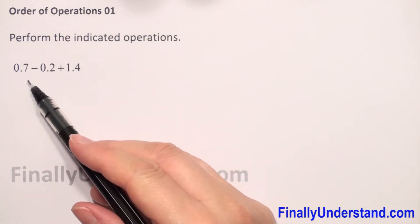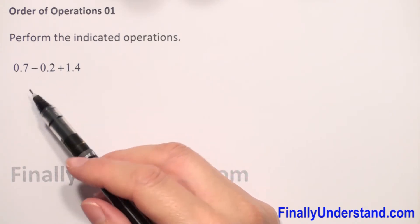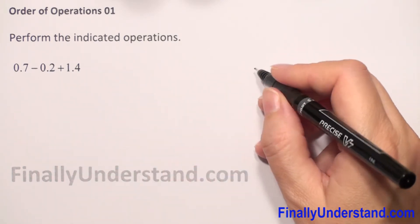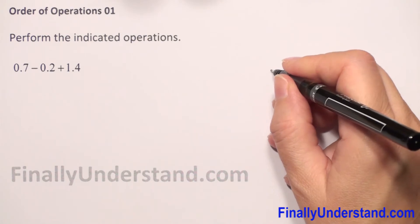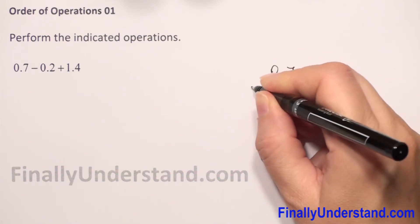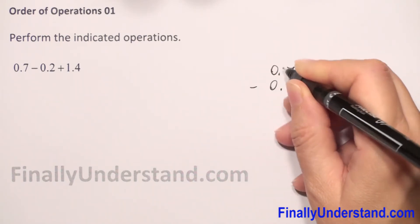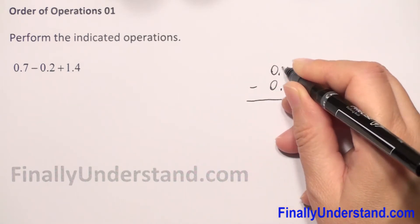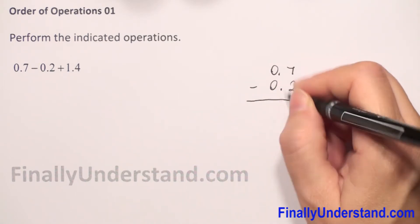So we have 0.7 minus 0.2. Two decimal numbers, so we have to subtract 0.7 minus 0.2. With decimal numbers, we have to keep the decimal points in the same column.